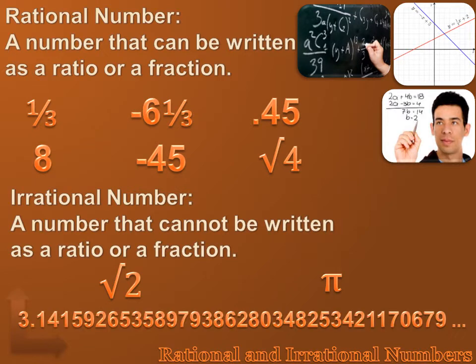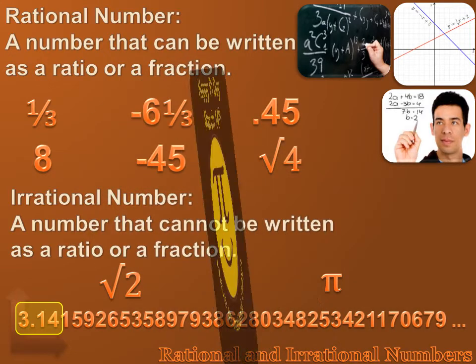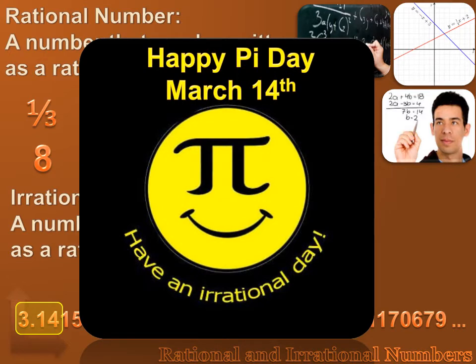And pi. Pi is the most famous irrational number. Pi equals 3.14159, and that number goes on forever. And it's not a repeating decimal. It's just a string of numbers that starts with 3.14. 3.14. Pi. 3.14. That's March 14th. That means that March 14th is Pi Day. And since Pi is an irrational number, we should all celebrate Pi Day by having an irrational day.